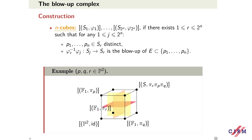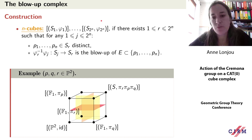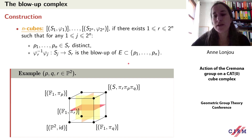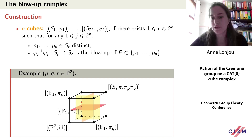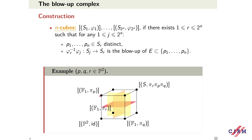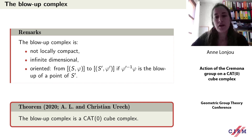An n-cube has 2^n vertices. It means there exist representatives such that one surface S_r contains n distinct points p1,...,pn, and all other vertices are obtained by blowing up all possible subsets of these n points. More precisely, the marking satisfies phi_r inverse composed with phi_g equals the blow-up of a subset of {p1,...,pn}. If we have P2 with three points, we get the vertex P2, three vertices from blowing up one point, three from blowing up two points, and one from blowing up all three — giving a 3-cube.